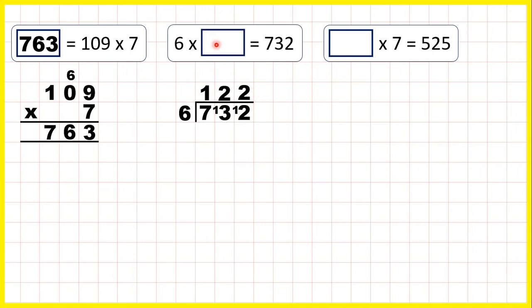And here, something times 7 equals 525. Again, whenever there's a missing number in a multiplication question, we use division to find our answer.